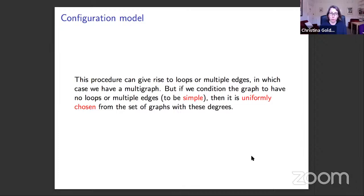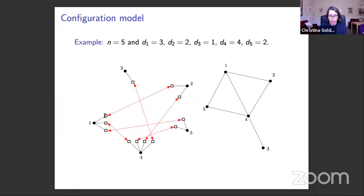This procedure can very easily give rise to loops or multiple edges. For example, if a half-edge connects to another half-edge on the same vertex, that creates a loop on vertex one. Similarly, if two half-edges between the same pair of vertices both connect to each other, you get a pair of parallel edges between the same vertices.